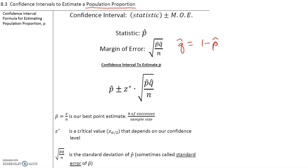P-hat is equal to x over n, where x is the number of successes and n is the sample size, and that is our best point estimate. In other words, p-hat, or the sample proportion, is the best estimate for the population proportion. Z-star is a critical value that depends on our confidence level, and the square root of p-hat q-hat over n is the standard deviation of p-hat, sometimes called the standard error of p-hat.